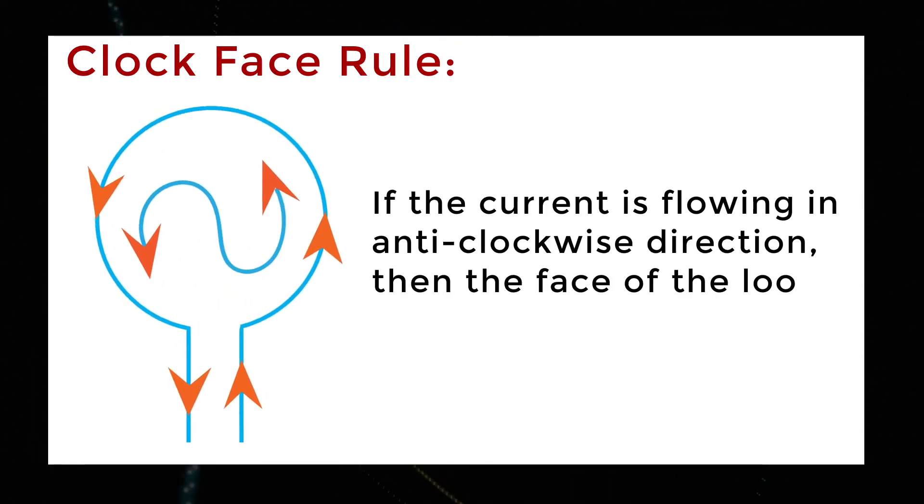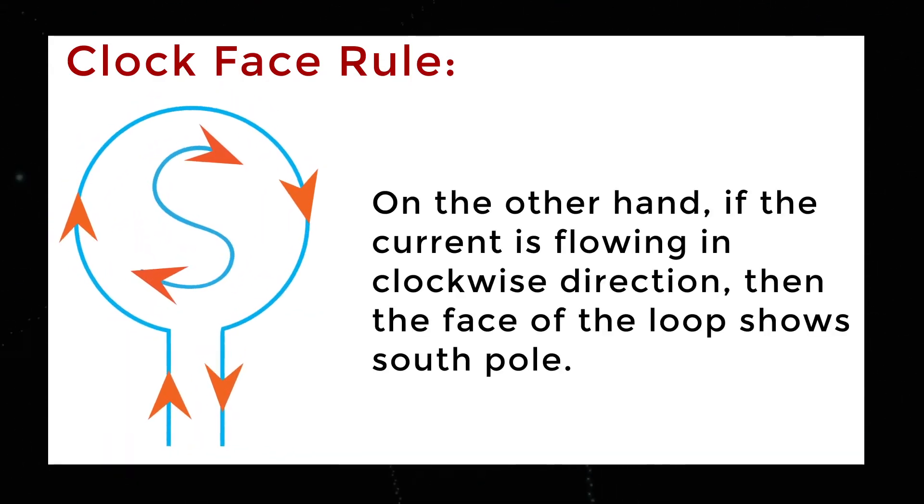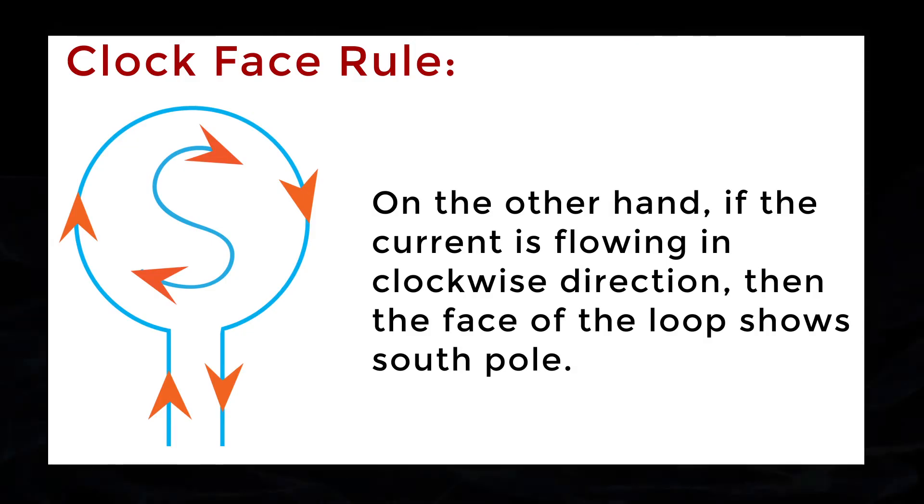If the current is flowing in anticlockwise direction, then the face of the loop shows north pole. On the other hand, if the current is flowing in clockwise direction, then the face of the loop shows south pole.